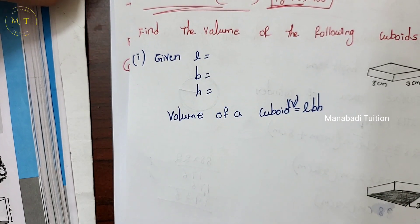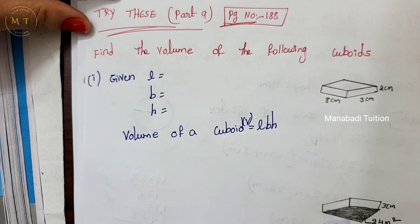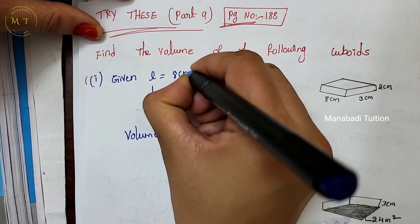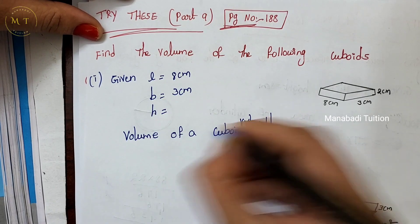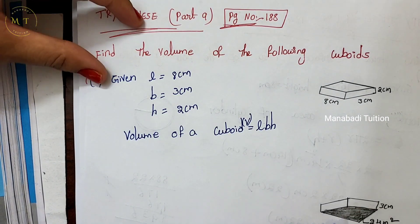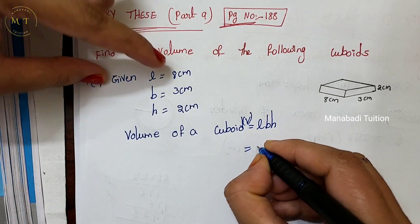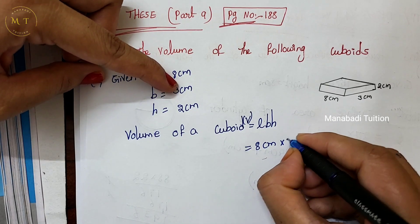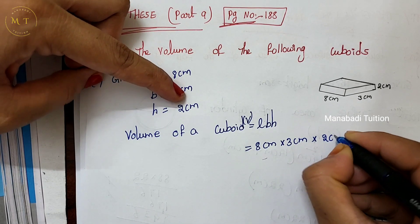First, I will find out the answer for the first question. Given: length is 8 cm, breadth is 3 cm, and height is 2 cm. Volume of cuboid is length into breadth into height.